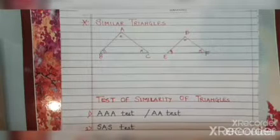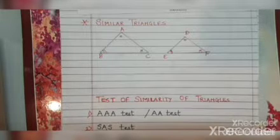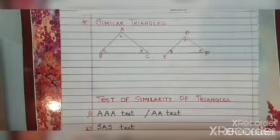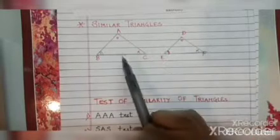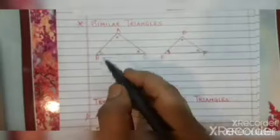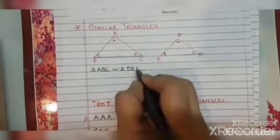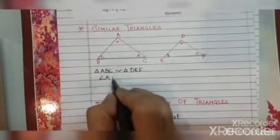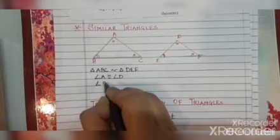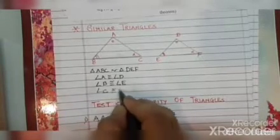In the beginning of the lesson I explained what similar triangles are. The triangles whose angles are congruent but the sides are in proportion. So, if triangle ABC is similar to triangle DEF, then we can write that the angles are congruent — angle A congruent to angle D, angle B congruent to angle E, and angle C congruent to angle F.